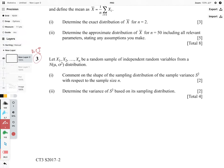This question is about sampling and the distributions of the sample variance. Let x1 to xn be a random sample of independent random variables from the normal distribution. Comment on the shape of the sampling distribution of the sample variance s-squared with respect to sample size n.